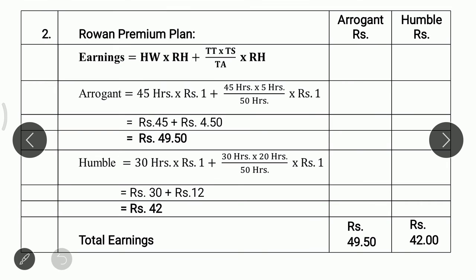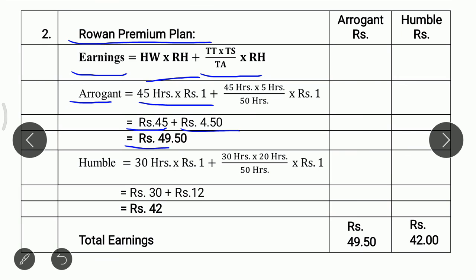Now we calculate earnings of both under Rowan Premium Plan. The formula is: Earnings = Hours Worked × Rate per Hour + (Time Taken × Time Saved ÷ Time Allowed) × Rate per Hour. In case of Arrogant, he works 45 hours into Rs. 1 = Rs. 45. Plus 45 × 5 ÷ 50 × Rs. 1 = Rs. 4.50. Earnings of Arrogant is Rs. 49.50.